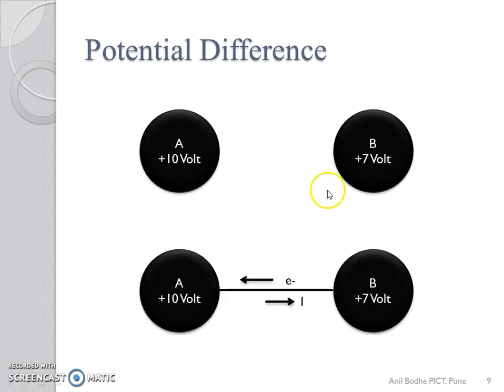Now, if the two bodies A and B are joined through a conductor, then electrons will flow from body B to body A and the direction of conventional current is from body A to body B. When two bodies attain the same potential, the flow of current stops.